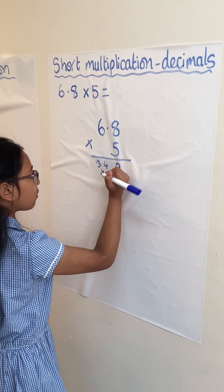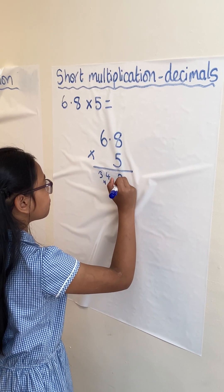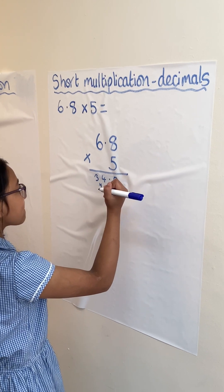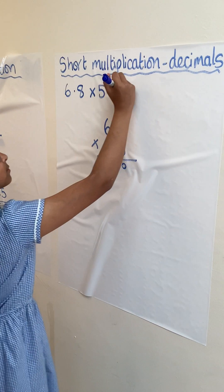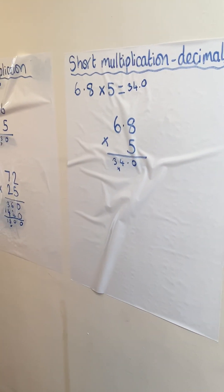Because our decimal number only has 1 decimal place, we know that our answer will also have 1 decimal place. So 6.8 times 5 is 34.